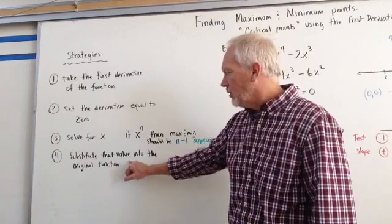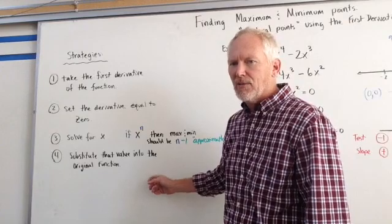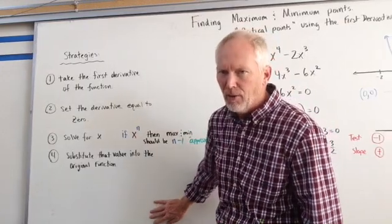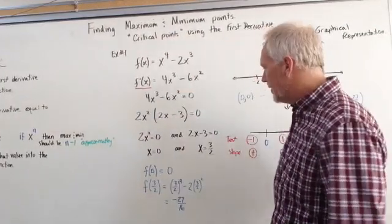Number four, we're going to substitute that value into the original function. Once we get that x value, we plug it back in, and we will find the y value of where that critical point is. Let's see an example.